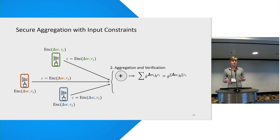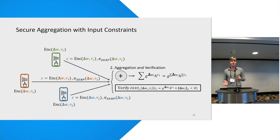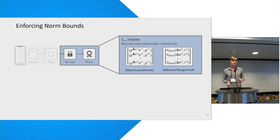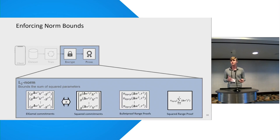With this encoding using ElGamal commitments, clients additionally send a bulletproof-based zero-knowledge proof that the server can verify to check that the update satisfies the norm bound. In ROFO we support both the L∞ norm and the L2 norm. For the L∞ norm, clients simply send a bulletproof range proof for each parameter. For the L2 norm it's a little more involved because clients have to send a proof for the sum of the square of each parameter — more details can be found in the paper.